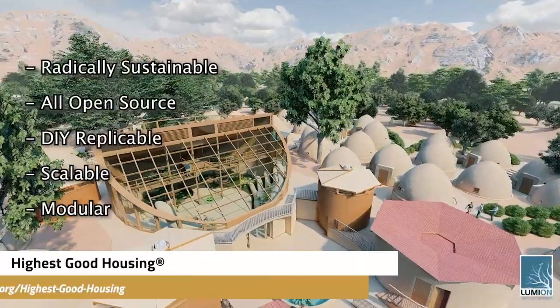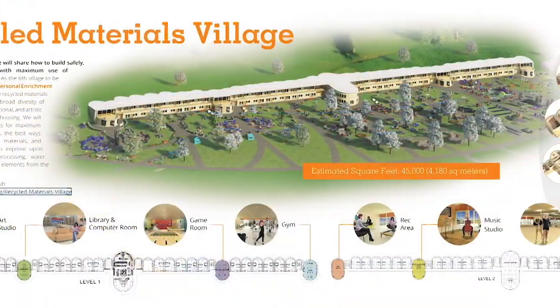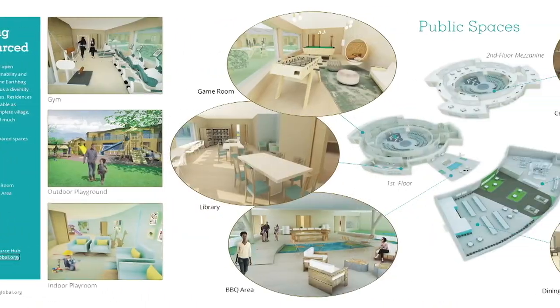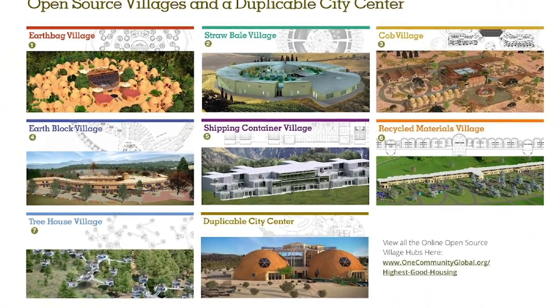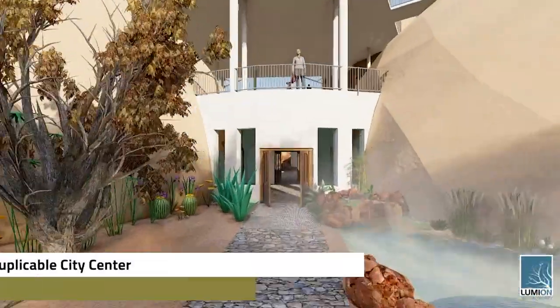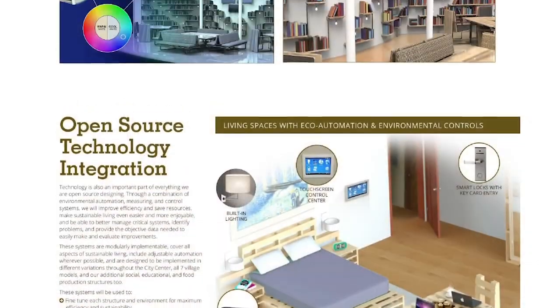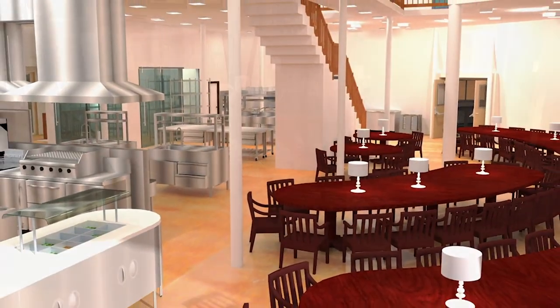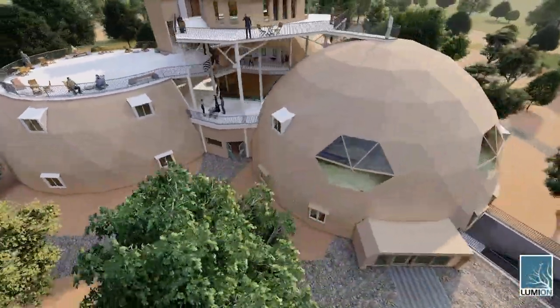The One Community approach to highest good housing is eco-artistic home building that is affordable, sustainable, do-it-yourself, duplicable, resource and space efficient, and consists of seven different sustainably constructed village models. One Community is also creating an open source duplicable city center designed to be LEED Platinum certified, provide 12 guest rooms, dining for over 150 people, and laundry and recreation space for over 300 people — all while saving money, time, space, and resources.